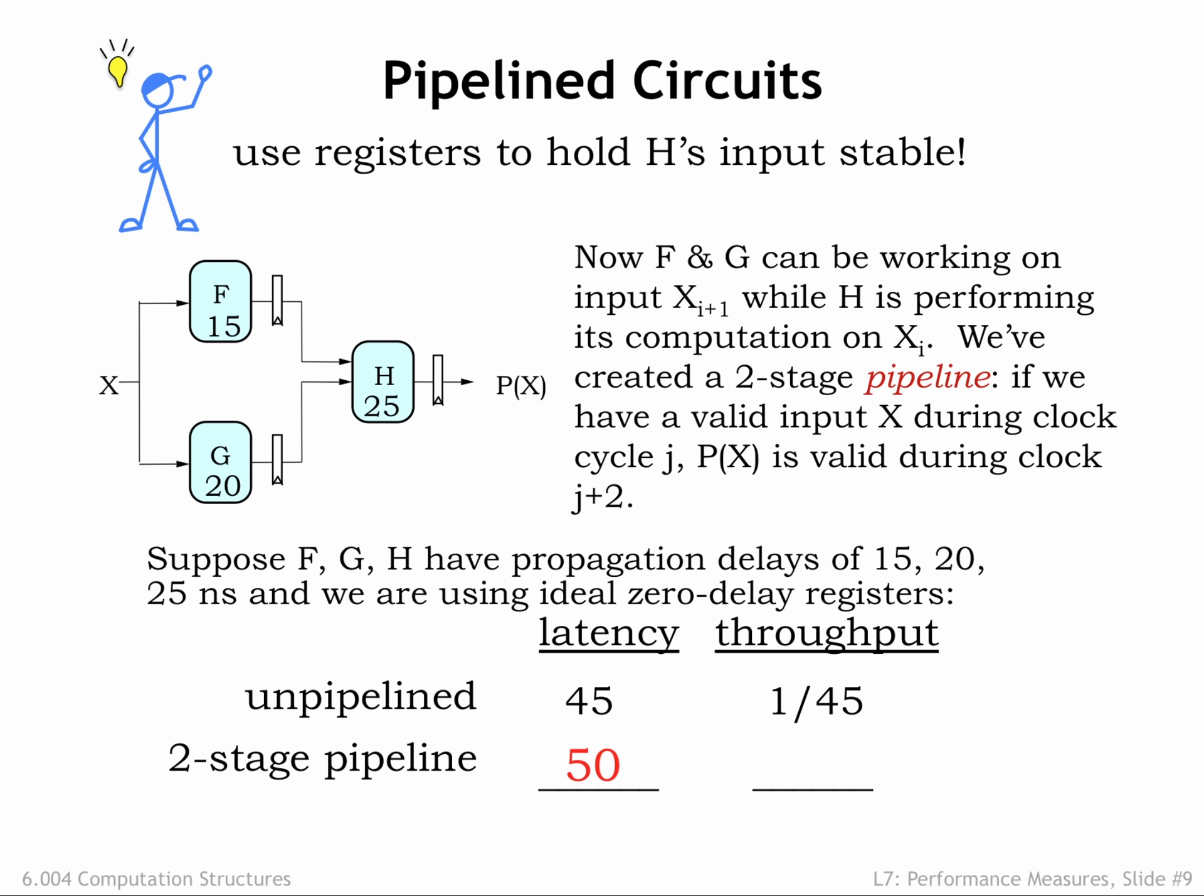In other words, the number of stages times the system's clock period. The latency of the pipeline system is a little longer than the latency of the unpipelined system. However, the pipeline system produces one output every clock period or 25 nanoseconds. The pipeline system has considerably better throughput at the cost of a small increase in latency.